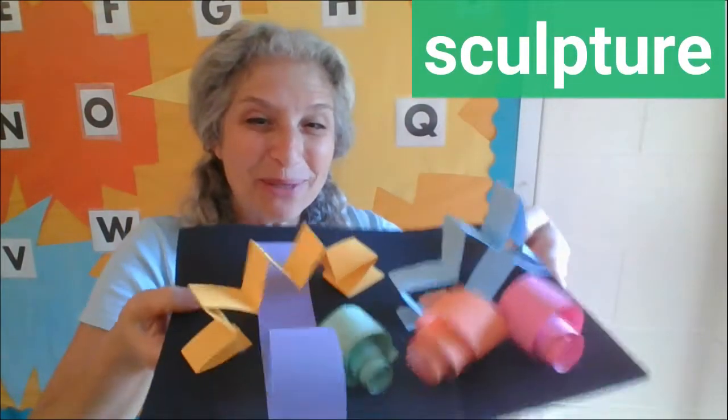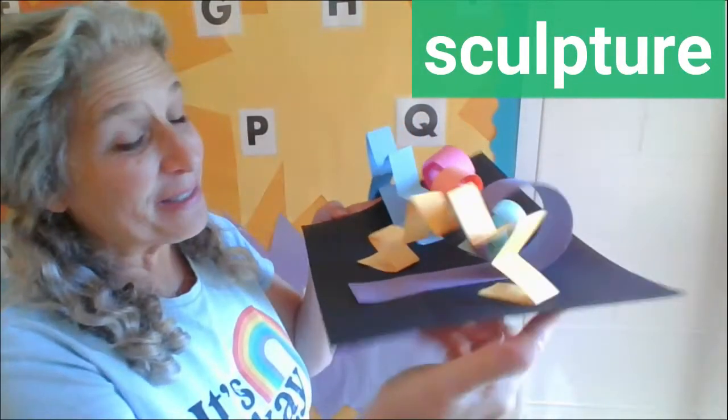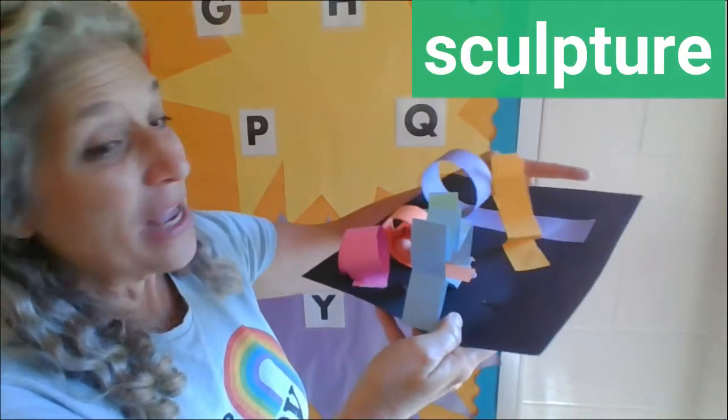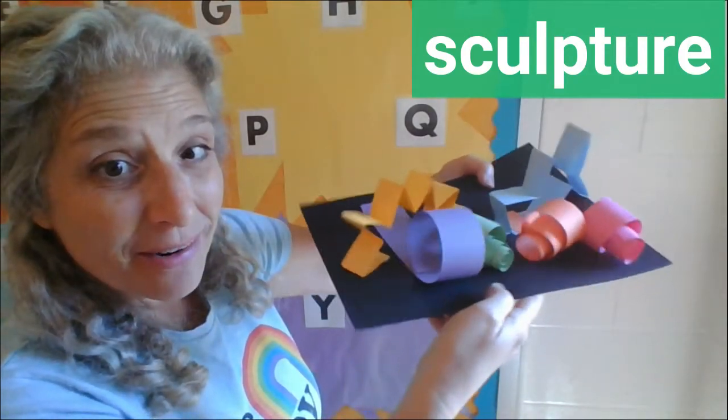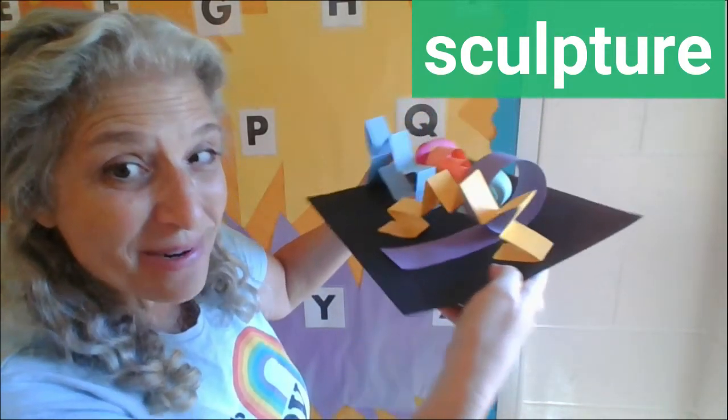Today we're going to take flat paper strips and make them into a paper sculpture. The cool thing about sculptures is that they have sides, so if you walk around them or they turn, they look different from each side. It's pretty cool, right?